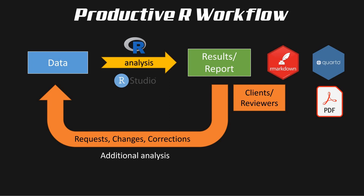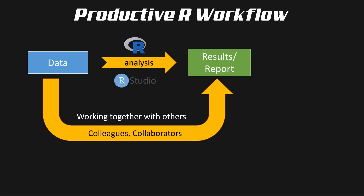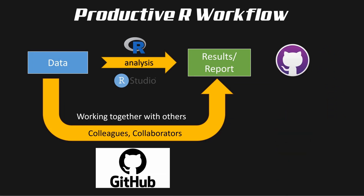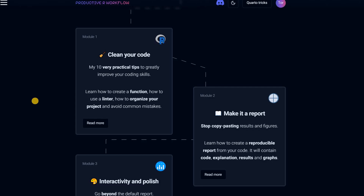You learn how to write reports in Quarto or with R Markdown that you can then turn into HTML files or PDFs. And you also learn that when you work together with others — colleagues or collaborators — it can be helpful to share your code or collaborate on GitHub by using GitHub Desktop software.